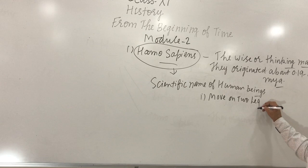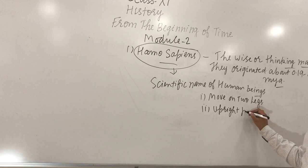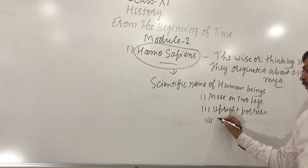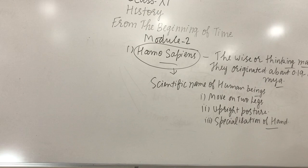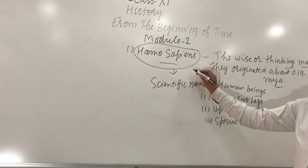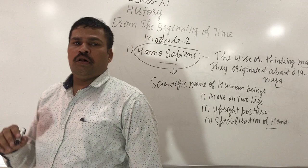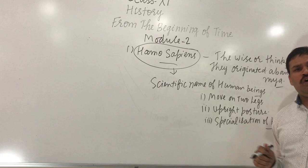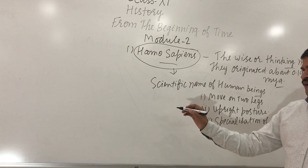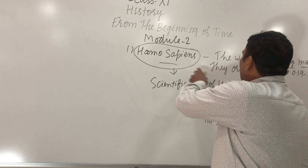Some of the characteristics they were having: they moved on two legs, that is the common upright posture. Specialization of hands was also a key feature. Gradually, other forms of modern men evolved from here. These were the tool makers with upright posture. As time progressed, a lot of changes came - first they were hunter-gatherers moving from place to place, then they became food producers.